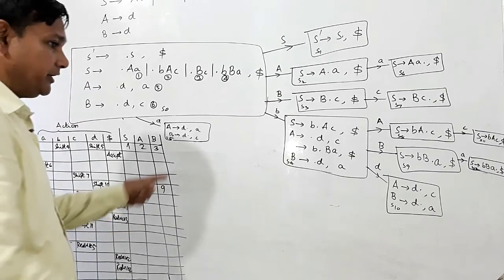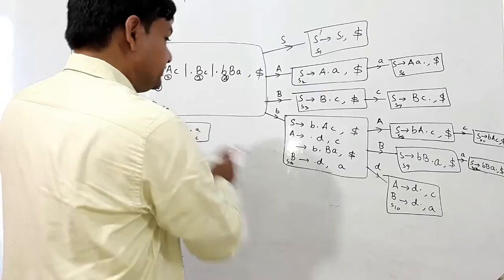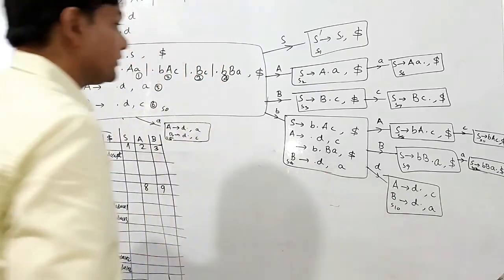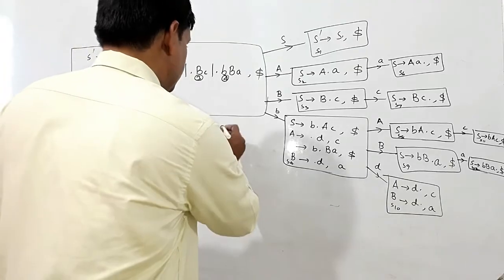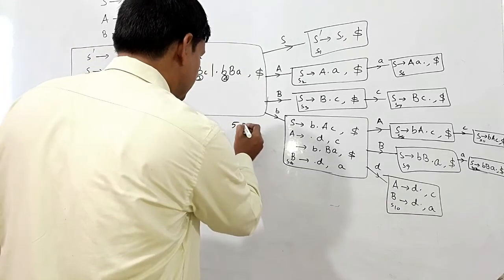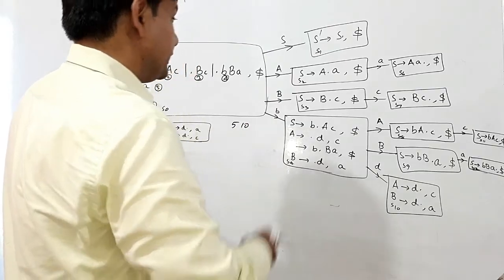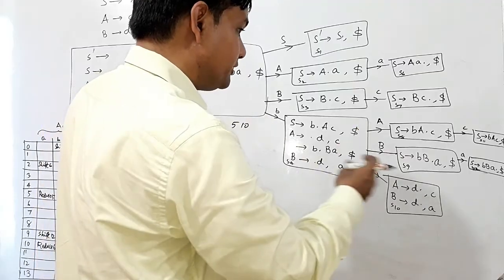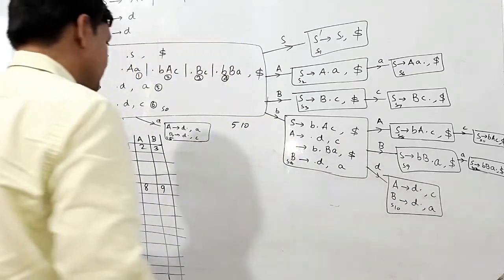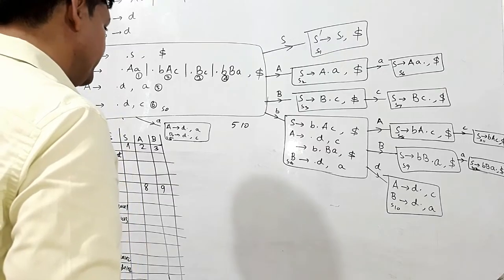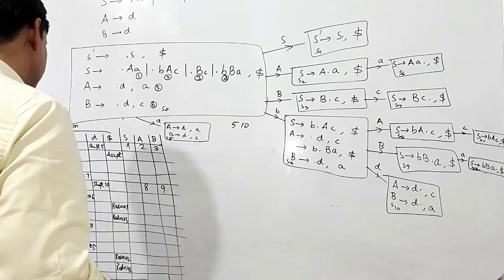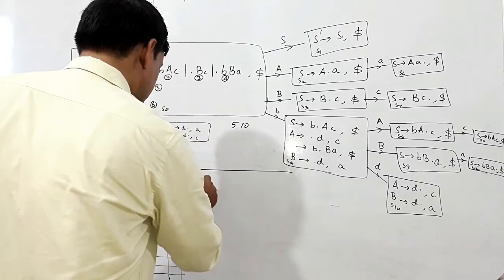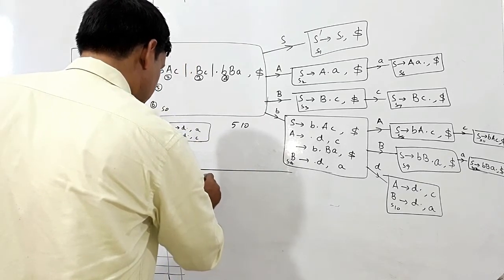But here you can see there are two states with the same core — DD. There is a change in lookaheads only between state 5 and state 10. Is there any other state in which only the lookahead is changing? No. So we shall merge states 5 and 10. The remaining states will remain as they are. So I am writing the merged state as 5, 10.